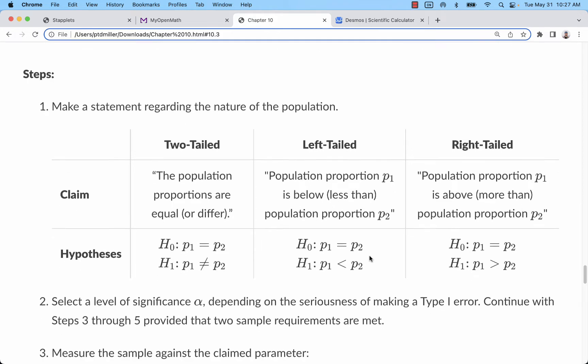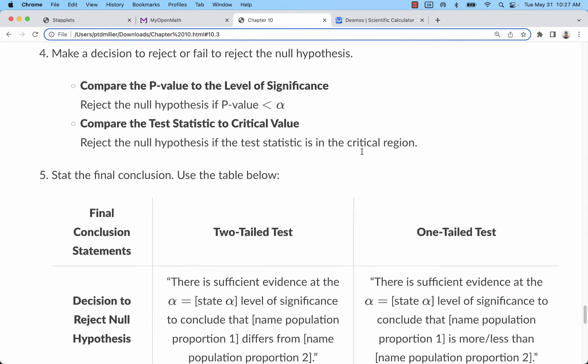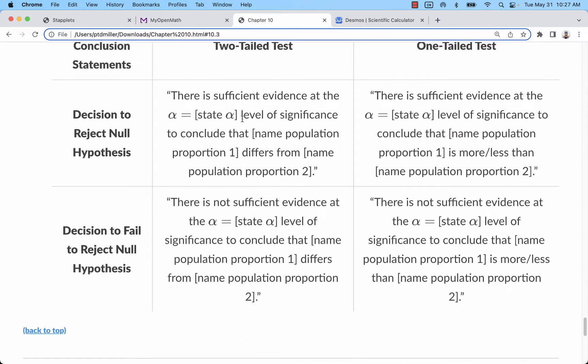Just like in the last section, you'd want to think of this as subtracting that P2 over and seeing if it's less than 0 or greater than 0 for your left and right tail tests. When we get down to the bottom, we'll use a Z test, make our decision, and convert that back into a conclusion.